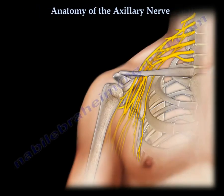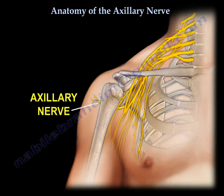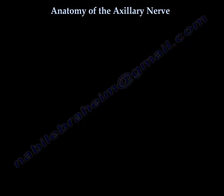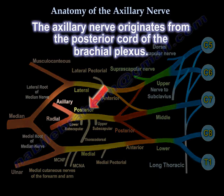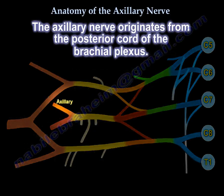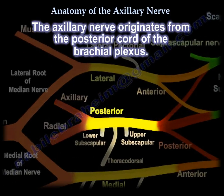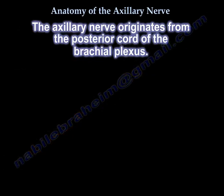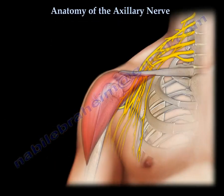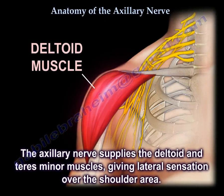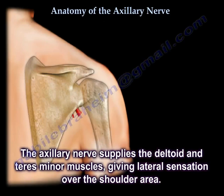Anatomy of the Axillary Nerve. The axillary nerve arises from the posterior cord of the brachial plexus. This diagram shows the axillary nerve and other branches from the posterior cord of the brachial plexus. The nerve supplies the deltoid muscle and the teres minor, plus lateral shoulder sensation.